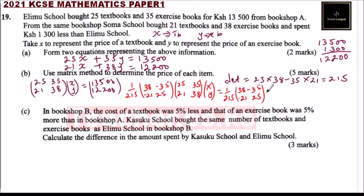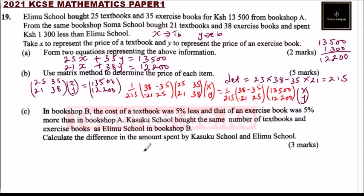We then multiply the inverse by the constants matrix: 13,500 and 12,200. Because the inverse of the coefficient matrix times the coefficient matrix gives the identity matrix, we end up with x and y. So x and y equals 1 over 215 multiplied by: 38 times 13,500 minus 35 times 12,200 for the first row.